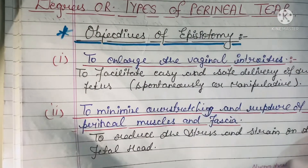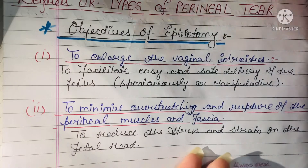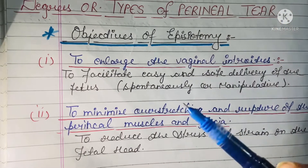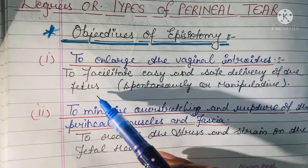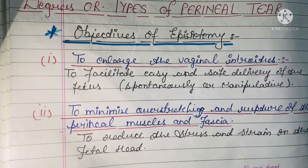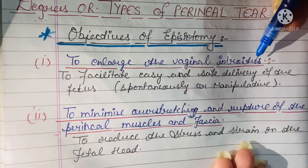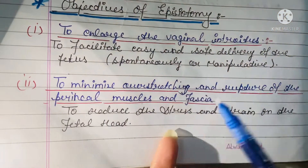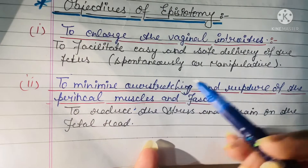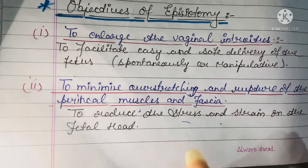Now moving to the objectives of episiotomy — why we should conduct episiotomy at the second stage of labor. First, to enlarge the vaginal introitus, to facilitate easy and safe delivery of the fetus, spontaneously or manipulative. Sometimes the vaginal opening is not sufficiently enlarged and fetal descent is interrupted, so episiotomy is done to avoid that. Second, to minimize overstretching and rupture of the perineal muscles and fascia, and to reduce the stress and strain on the fetal head.